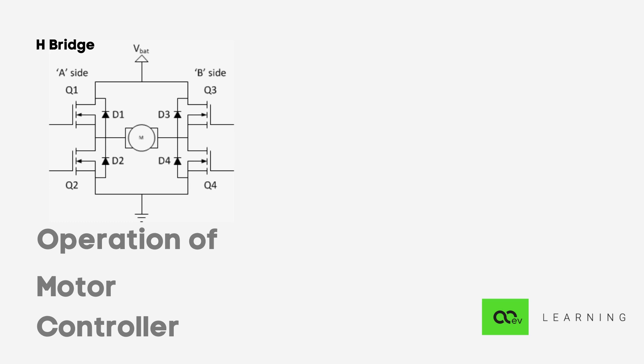We have four switches Q1, Q2, Q3, and Q4. The arrangement resembles the letter H, hence the name. Now while operation, the switches are operated in pairs of Q1 with Q4 and Q3 with Q2.